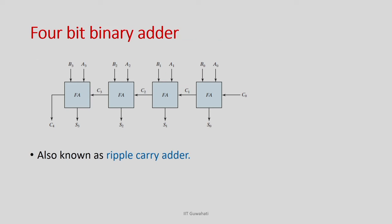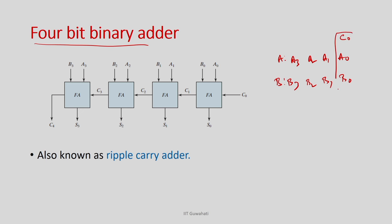Once we have this one full adder with three inputs (A, B, carry in), we can connect them in a chain for a multi-bit implementation. This is a 4-bit adder: numbers A (A0, A1, A2, A3) and B (B0, B1, B2, B3). We assume an initial carry C0 (usually 0) and connect A0, B0 to the first full adder.